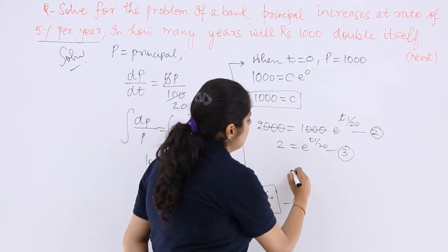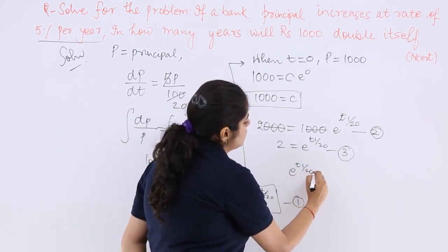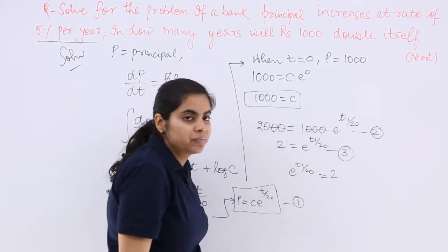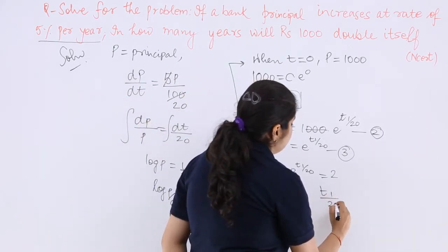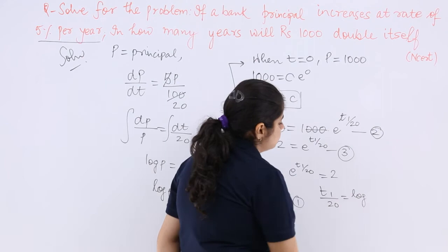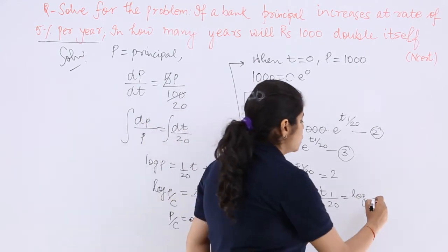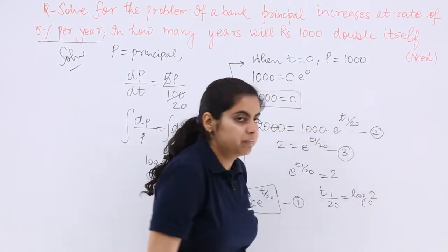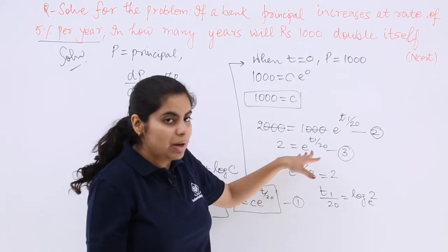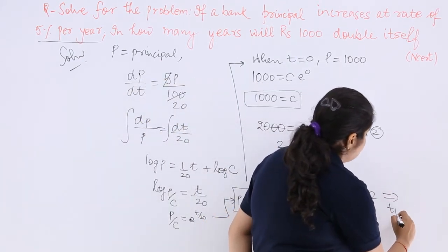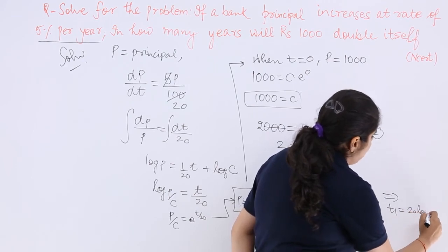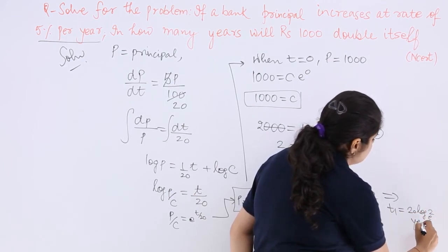Or what you can do is, you can write it in another manner. Because what is unknown should be this side. Now log, when T1/20 has to remain here. So it is log, log 2 base e. Because e raised to the power was there. And another thing, from here I can compute my T1 as 20 log 2 base e years.